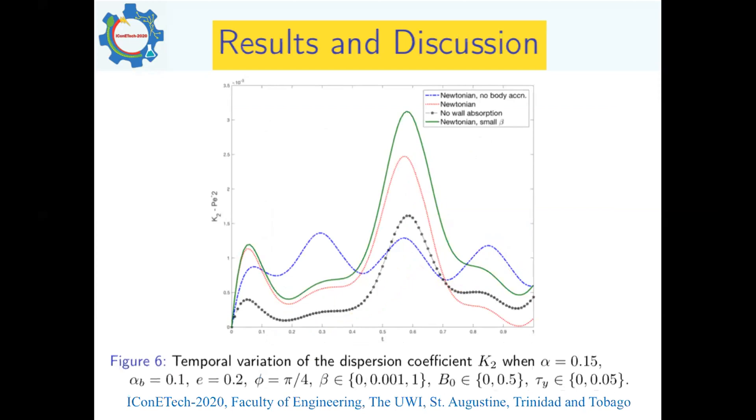Figure six shows time variation of dispersion coefficient K_2. We observe that at some critical time t approximately equal to 0.6, the flow is enhanced and attains a maximum dispersion rate when body acceleration is imposed. For the Newtonian case with no body acceleration, depicted by the blue plot, the flow is predictably cyclic though unsteady. In all instances, when body acceleration is present, the fluctuation in the magnitude of the dispersion coefficient is much more pronounced.